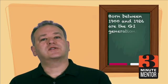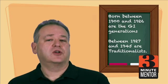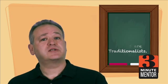Okay, number one, the generations. The book outlines six generations, periods of time people were born in, but they're not all going to be in your workplace. First, born between 1900 and 1926 are the GI generation. Born between 27 and 45 are the traditionalists.